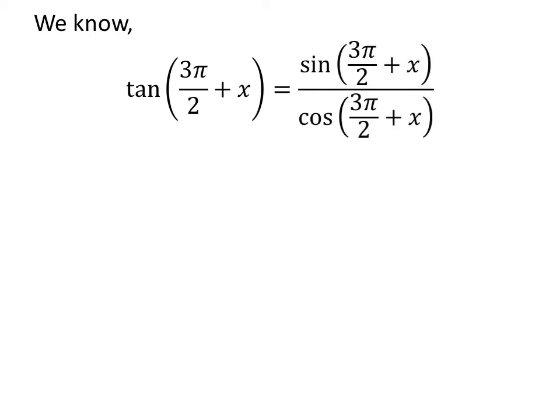As we know, tangent of theta is equal to sine of theta upon cosine of theta. So, tangent of 3 times pi upon 2 plus x is equal to sine of 3 times pi upon 2 plus x upon cosine of 3 times pi upon 2 plus x.